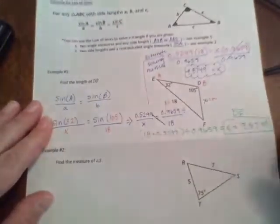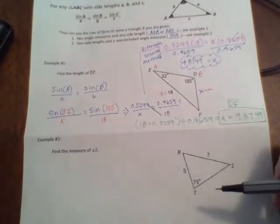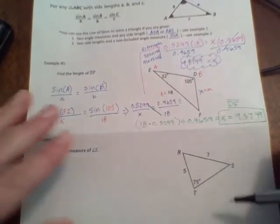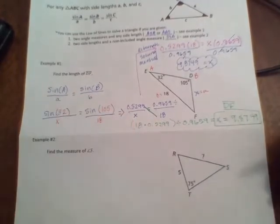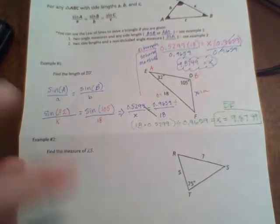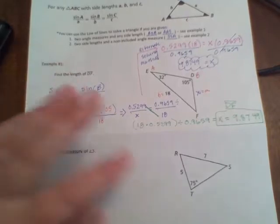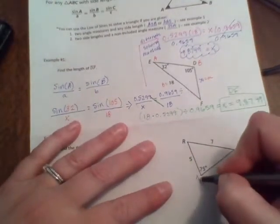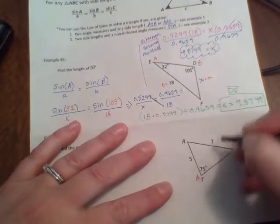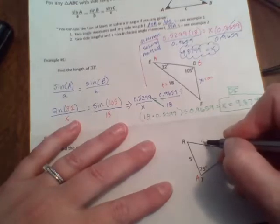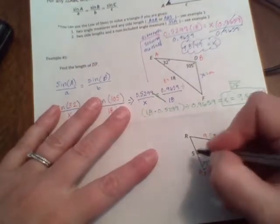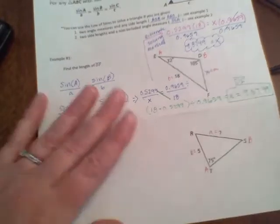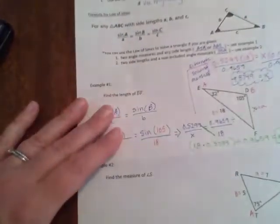Our next example is finding the measure of angle S. So now we're finding the angle and not the side length. But that is perfectly doable as well. So to start us off, I'm going to do the same thing as I did before and label things as A and B. So I'm going to actually make this A and then this side length a. And then since we're talking about S, I'm going to make this B and this side length b. Just so that I can use the formula a little bit more directly.